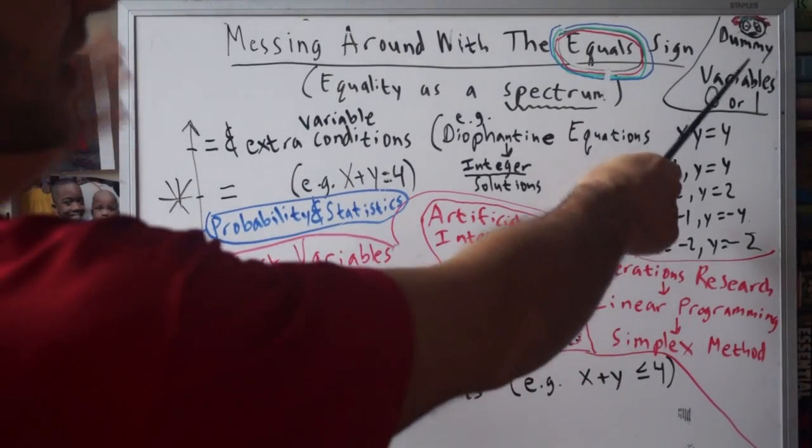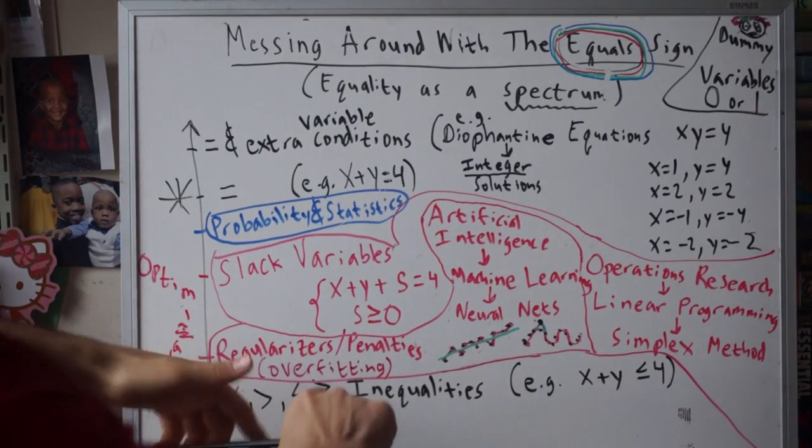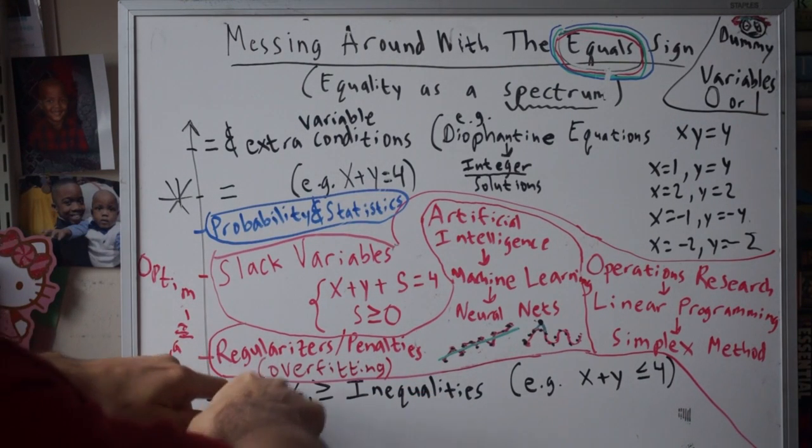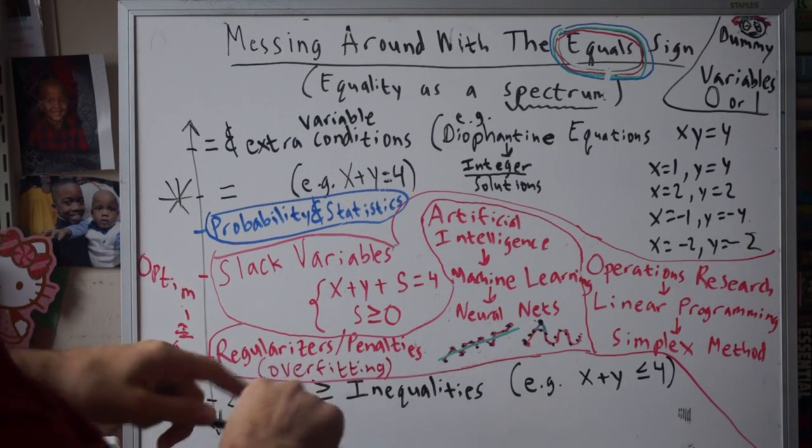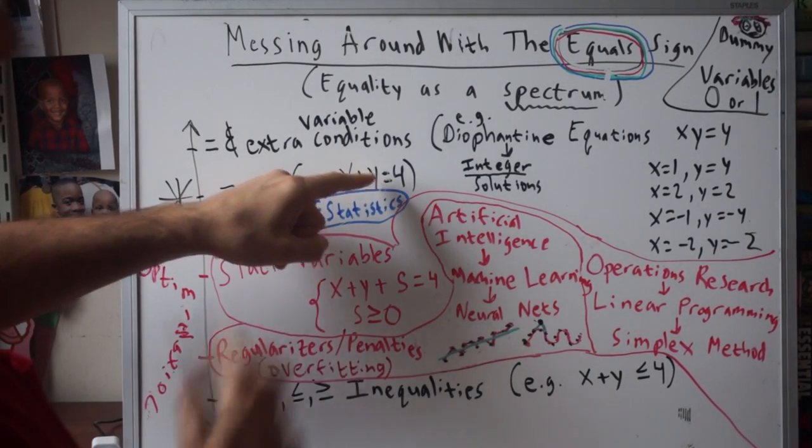All the way here we have inequalities: less than, greater than, less than or equal to, greater than or equal to. But in here this is kind of an interesting region. What if we want this to be true but only some of the time?